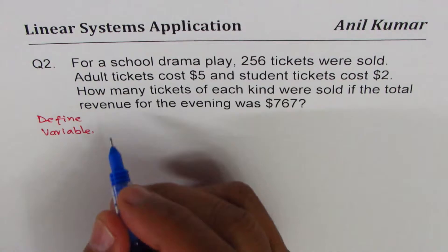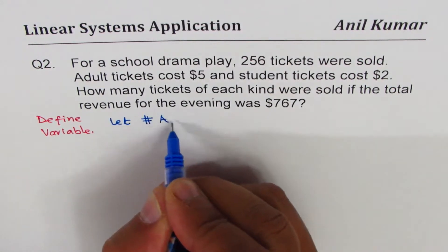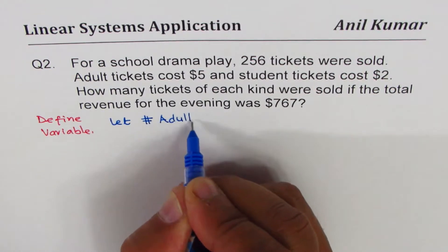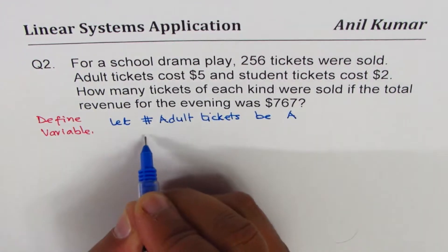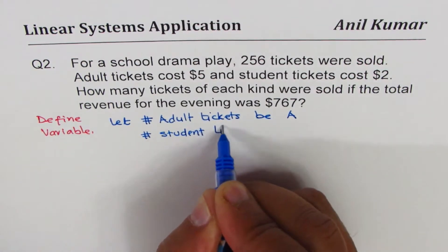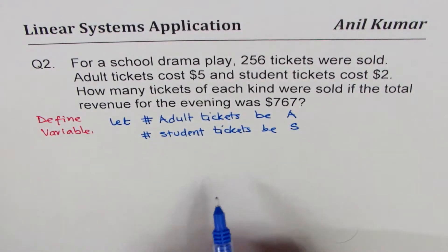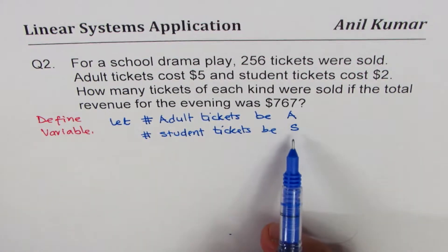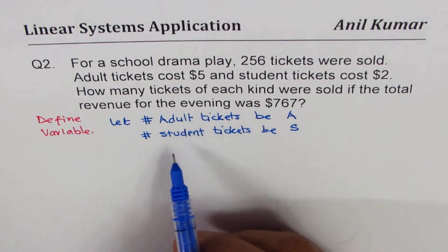Normally it is done with a let statement. So we say: let the number of adult tickets be A, and let the number of student tickets be S. It is not necessary to always write X and Y. I prefer to use variables which are meaningful and which can connect you with the given question — A for adults and S for students.